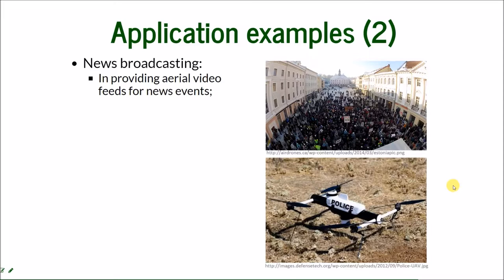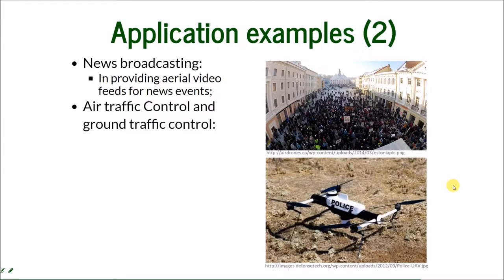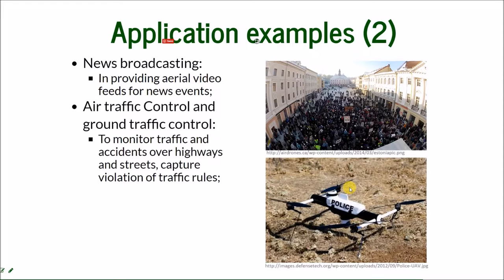News broadcasting would be possible in this way. There is also air traffic control and ground traffic control. You can see here the little police drone — in areas where you cannot get by car because of traffic, you can monitor traffic by flying with the drone. You can also monitor air traffic in this way. As seen over highways, drones can also be used to capture violations of traffic rules.